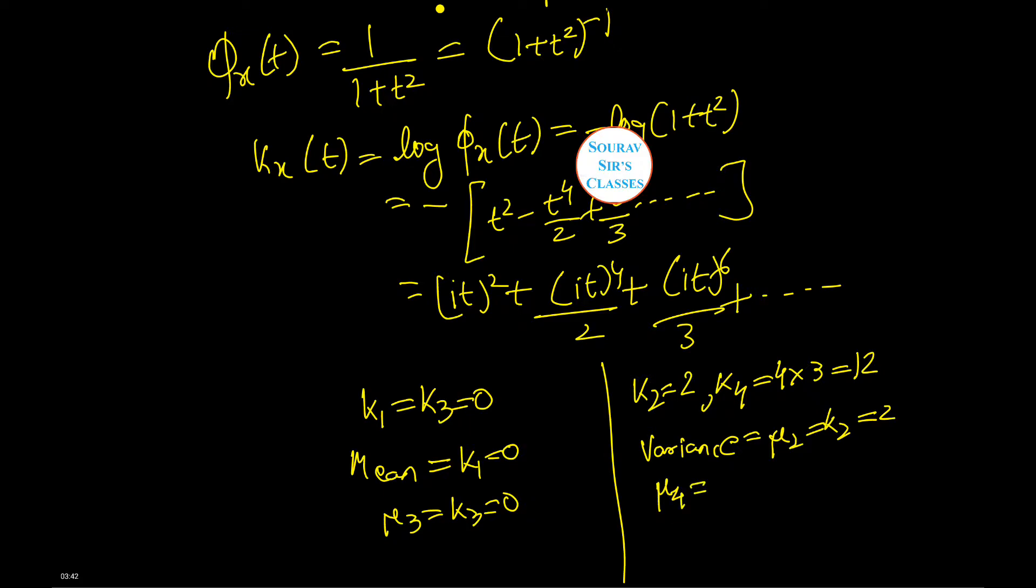μ₄ is equal to k₄ plus 3k₂², which is equal to 12 plus 12, which is equal to 24. Beta₂ is equal to μ₄ by μ₂², which is equal to 6.